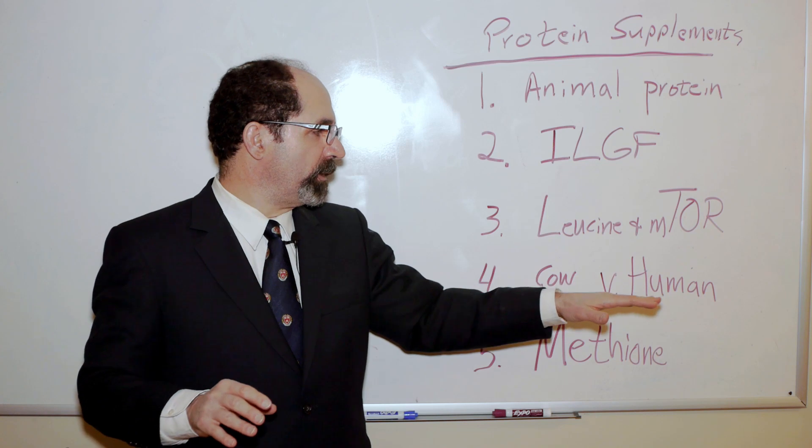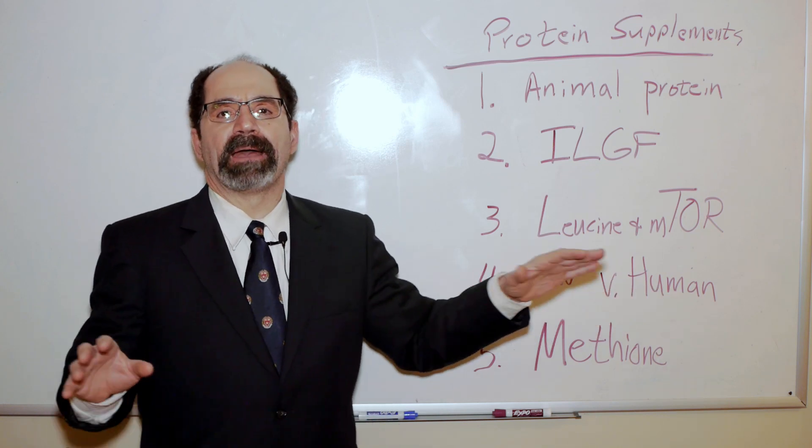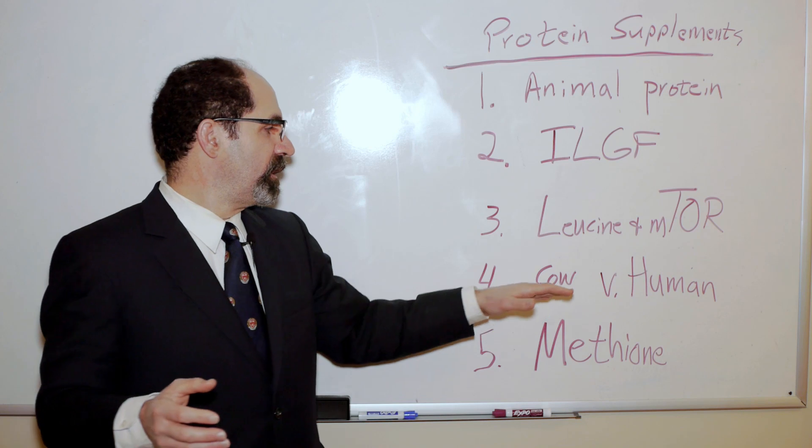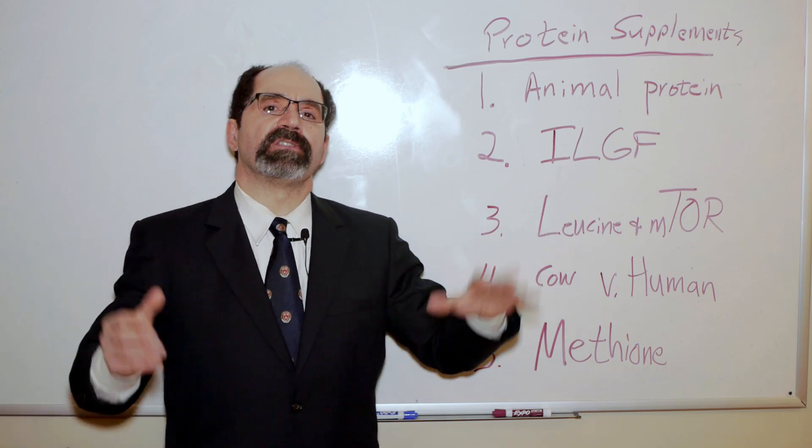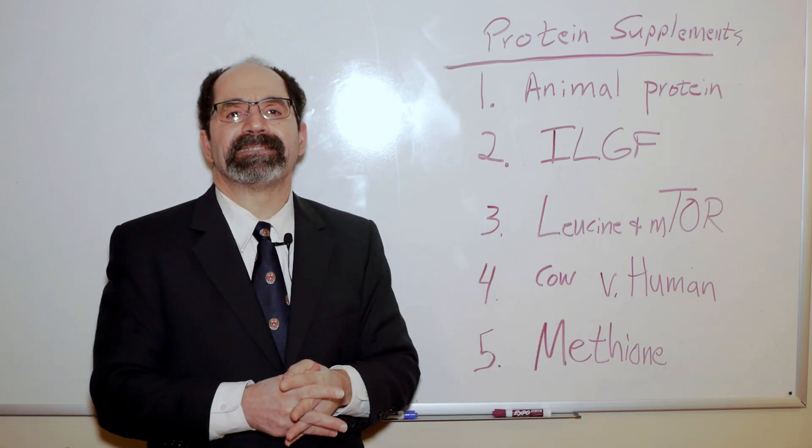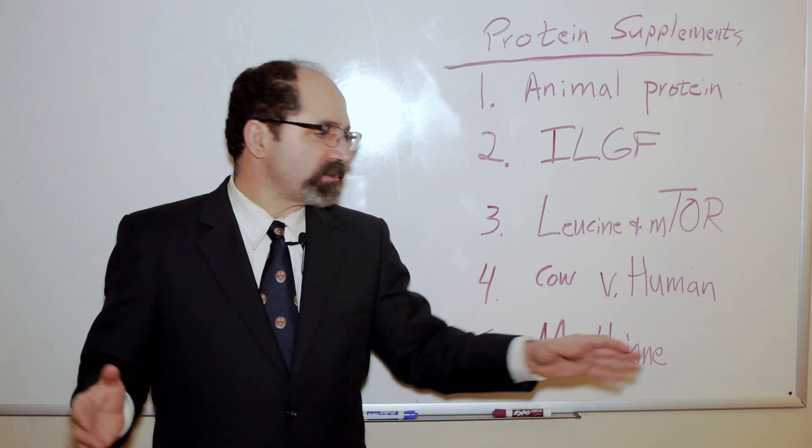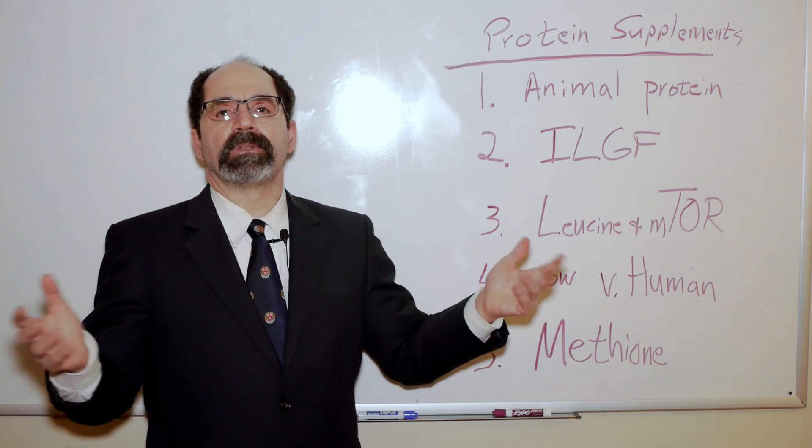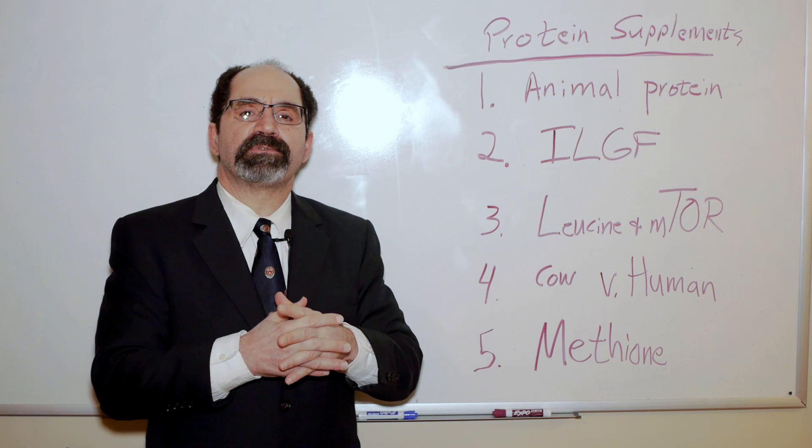Next thing, cow versus human. You know, a human baby milk only has about 6% protein in it. Cow milk has about 18% protein, three times as much. The point being is that humans don't need much protein. That's about as fast as a person's ever going to grow when they're a baby, and 6% protein.